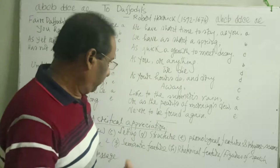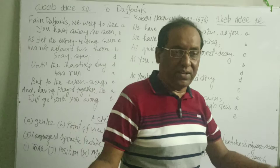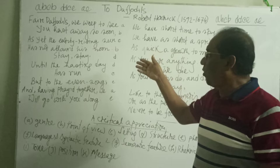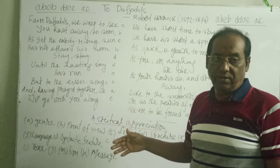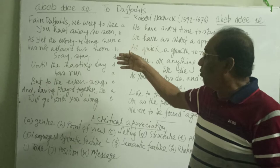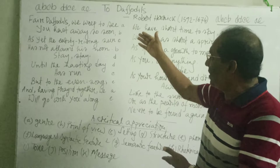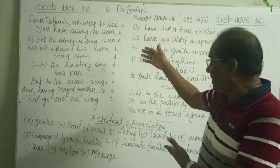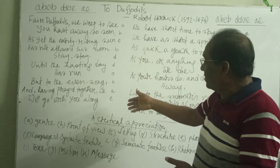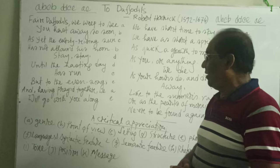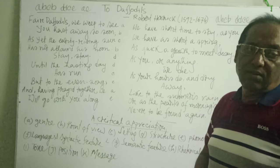We can also explain the language and syntactic feature of the poem. The language of this poem is very simple, vivid, lucid, and clear. We find most of the words are monosyllabic, and the sentences are very short and simple. Most of the sentences, though short, are pregnant with meaning, and grammatically most of the sentences are correct.